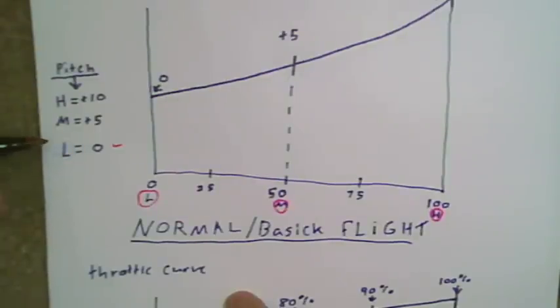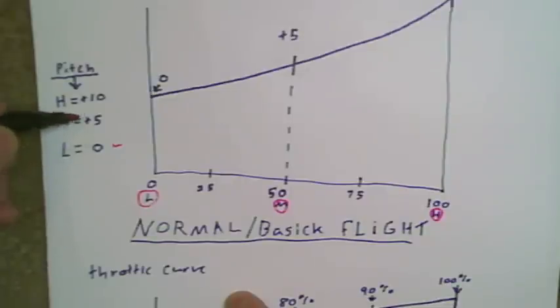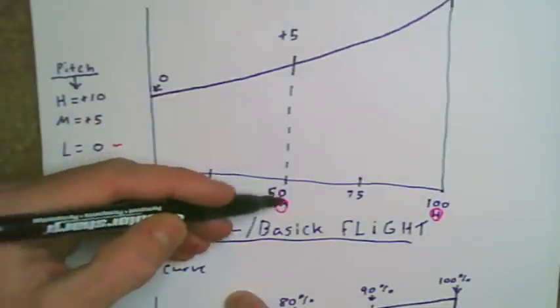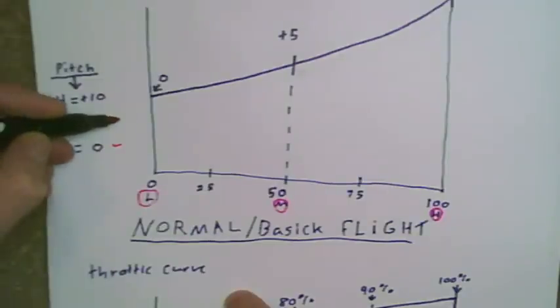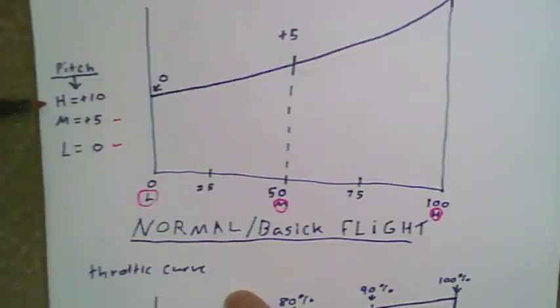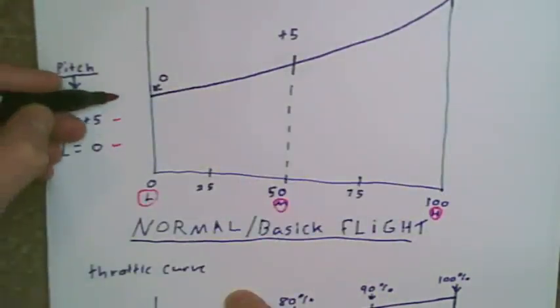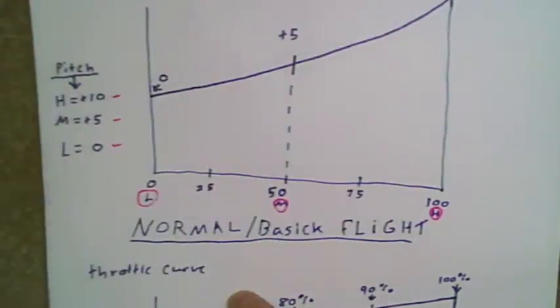Some people choose to put a little bit of negative in there — I like to just do zero. At the mid stick position, which is exactly 50 in and 50 out, you're going to want to look for a plus five. Then at the high position, all the way up, we're going to look for about a plus ten.